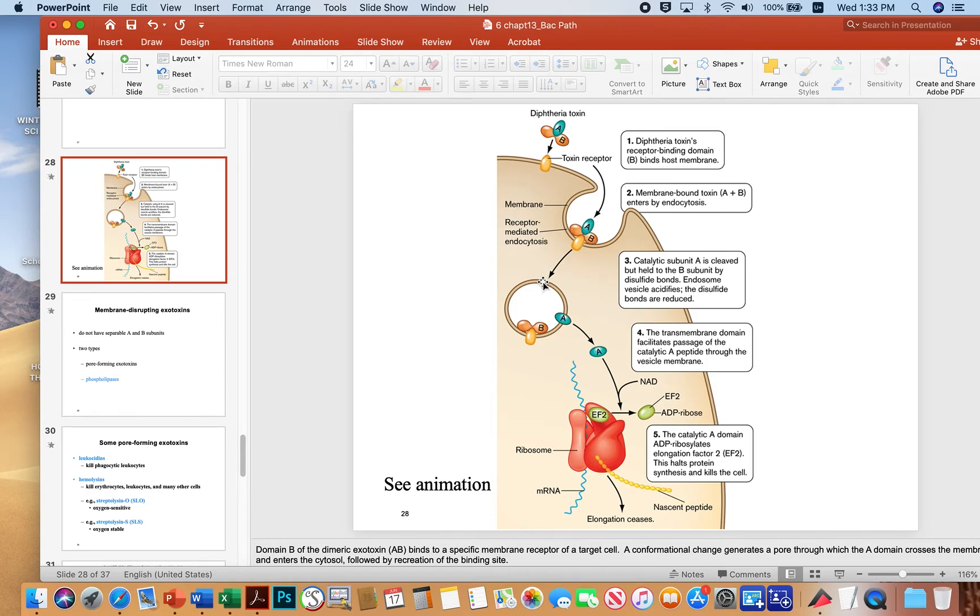So the toxin's B portion binds and the A portion, as you see here, will eventually come in together into the cell. The A portion can translocate into the cytoplasm. So what the A portion actually does is it grabs ADP ribose. You see this ADP ribose here? It grabs that molecule off of NAD and sticks that ADP ribose that it steals from NAD onto EF2.